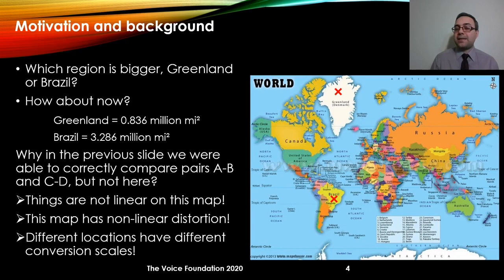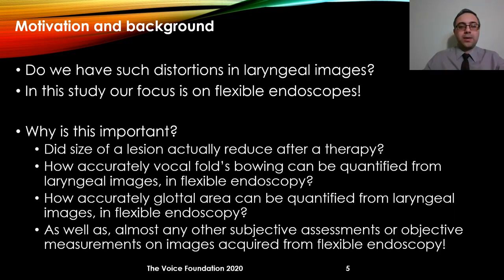Equivalently, if we select a line of one centimeter on Greenland, we should multiply it with a much smaller number compared to when that line has been selected over Brazil. So basically the conversion scale we saw in the previous slide was constant for all spatial locations of that image, but here we have a conversion scale that depends on the spatial location of the object. In this study we want to see if such nonlinear distortion exists in laryngeal images, and we will specifically focus on the flexible endoscope, which is very important and relevant for the field.